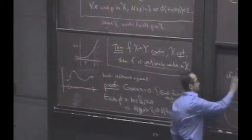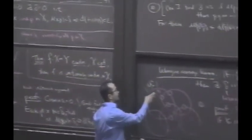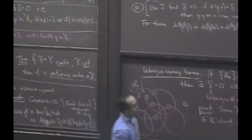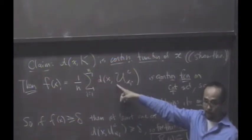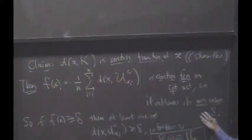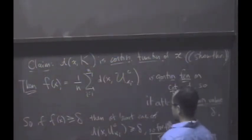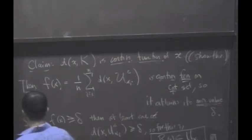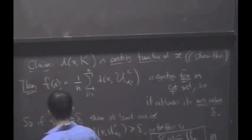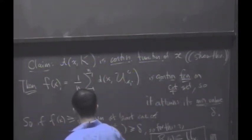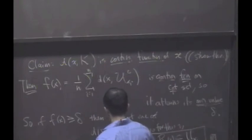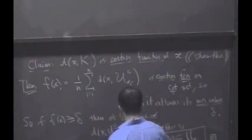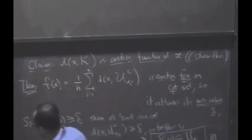So the fact that this thing is a cover means that, what, for every x, what? It's in one of them. So this function has to be non-zero everywhere. Yes? Everywhere. So its minimum value has to be bigger than zero. OK? So notice, delta is bigger than zero because f of x is strictly bigger than zero at each x, since the u sub alpha i are a cover. Right?